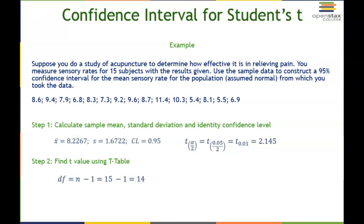We have everything we need to calculate our EBM. Our EBM will be our t-score times our sample standard deviation divided by the square root of n. The only two things that are different here is instead of a z, we're using a t, and instead of a sigma for the population standard deviation, we're using our sample standard deviation. Plugging our three values in, we get 2.145 times 1.6722 divided by the square root of 15, so our error is 0.9261.